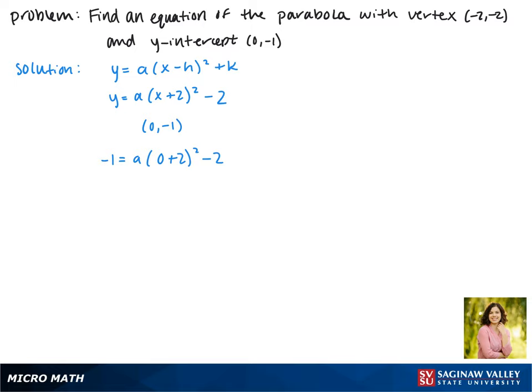Adding 2 to the other side, we get 1 equals a times 2 squared. This gives us 1 equals a times 4, which gives us a equals 1 fourth.